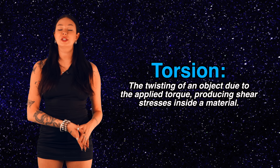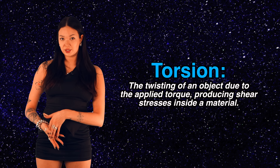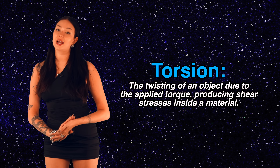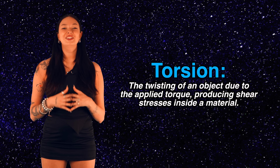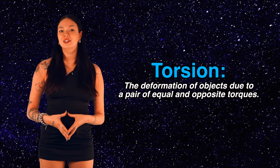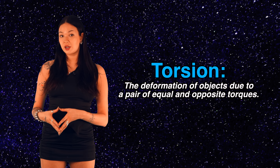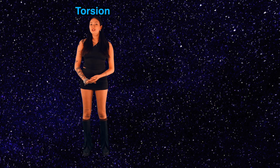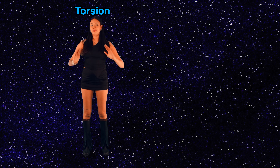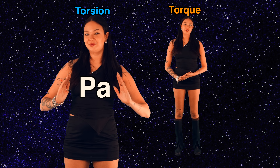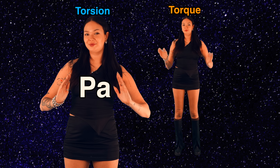So basically, torsion means the twisting of an object due to the applied torque, and it produces shear stresses inside the material. Torsion is the deformation of objects due to a pair of equal and opposite torques. The SI unit for torsion is the Pascal (Pa), while torque is expressed in Newton meters (N·m).